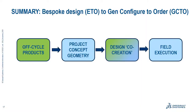That is basically the summary of what it means to do generative configured to order and productize buildings. To summarize: to go from bespoke engineering to order to generative configured to order, we first have a team doing off-cycle products — within our company or a supplier like the wall panel producer or Schindler. We kick off a project normally with a project team, make concept geometry, go to BIM LOD 200, but then use those off-cycle products and modules to co-create the finished design. We then use that to inform field execution and reduce the number of things that need to be installed on site.